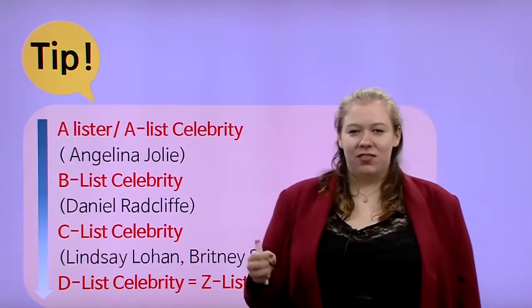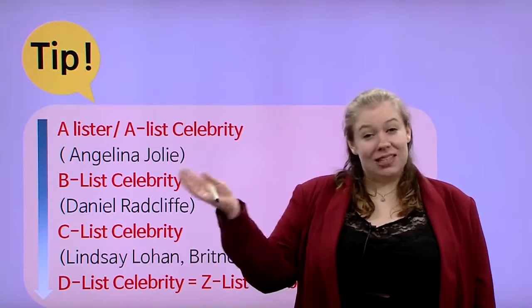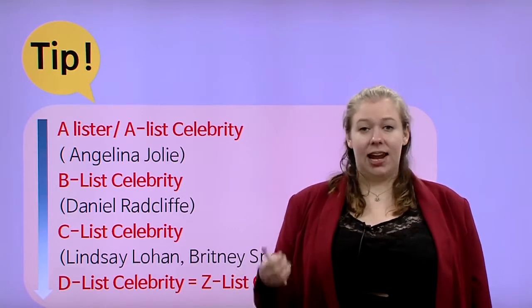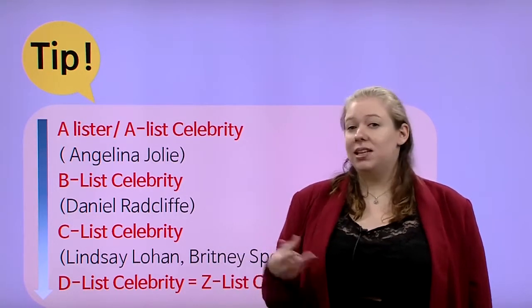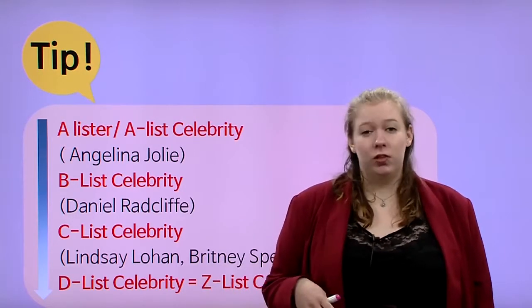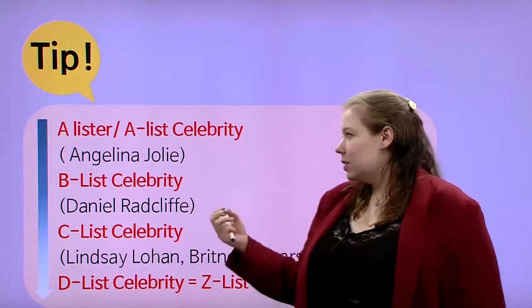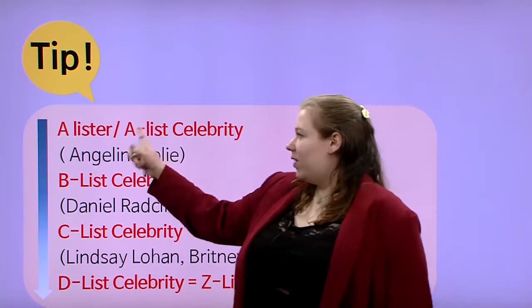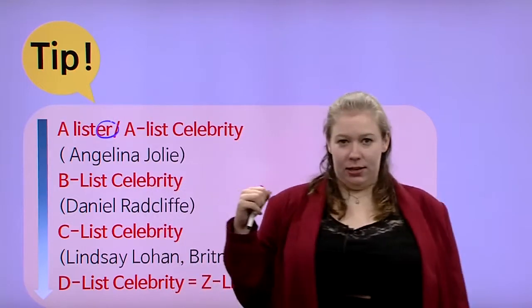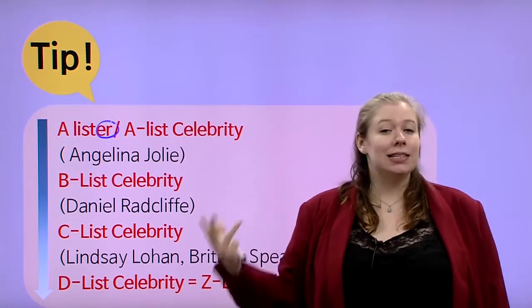I'm going to go over this idea of A-급. A-급 — well, 급 means class, but here we're going to say 'list.' In English, we say A-list. So B-급 is B-list, C-급 is C-list. Actually 목록. So we have A-lister — remember the -ER means person — so A-lister or A-list celebrity, same meaning.